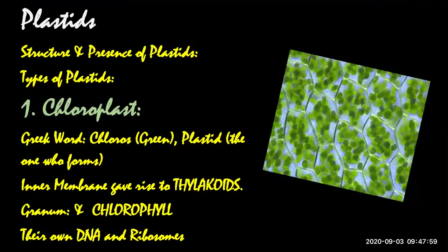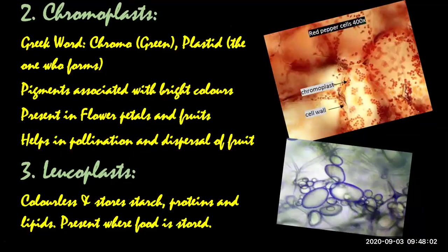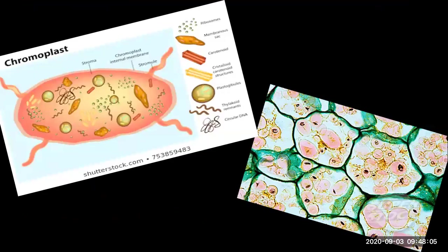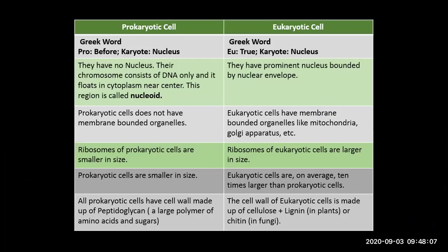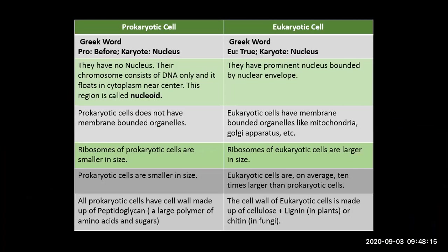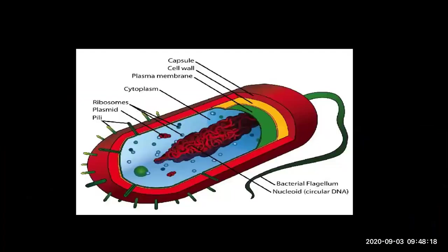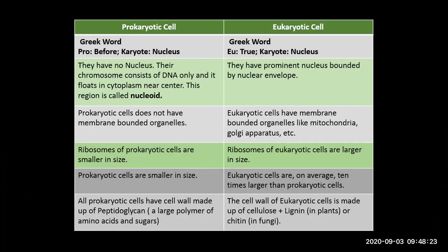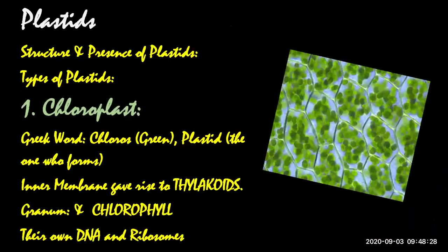I told you about chloroplast, chromoplast, and leucoplast. This is all about today's lecture. I also told you about the difference between prokaryotic and eukaryotic cells. You can cover this topic in exams and make two diagrams — one of a bacterial cell and one of a eukaryotic cell, either plant or animal. I hope you understand and you can ask me any question in the comments or on WhatsApp.